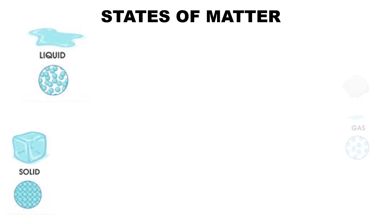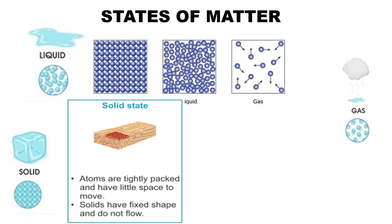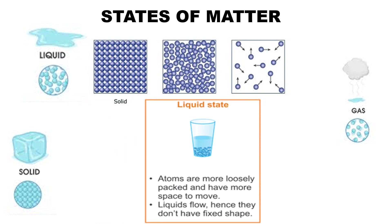States of matter. Matter exists in three states: solid, liquid, and gas. The arrangement of atoms in solid, liquid, and gas is shown in this diagram. In solid, the atoms are tightly packed with very little space to move, so solids have a fixed shape and they do not flow. In liquids, there is a little space between the atoms — atoms are more loosely packed and have more space to move, so liquids can flow and do not have a fixed shape. They do have a fixed volume, though. If you take one liter of water, it will remain one liter even if you change the container — it just takes the shape of the container.